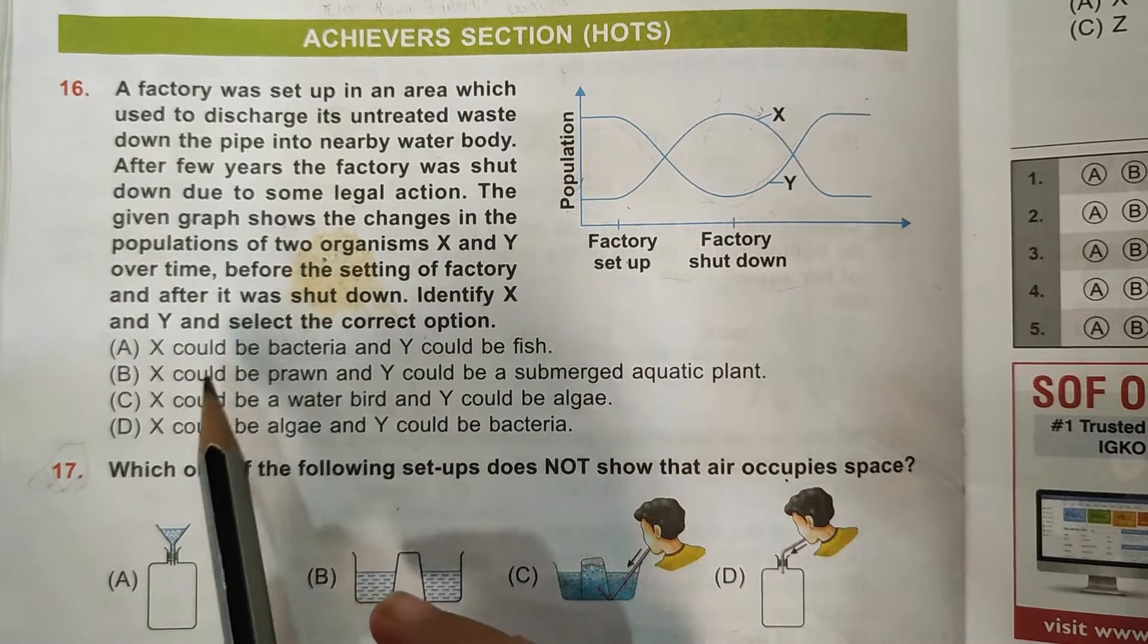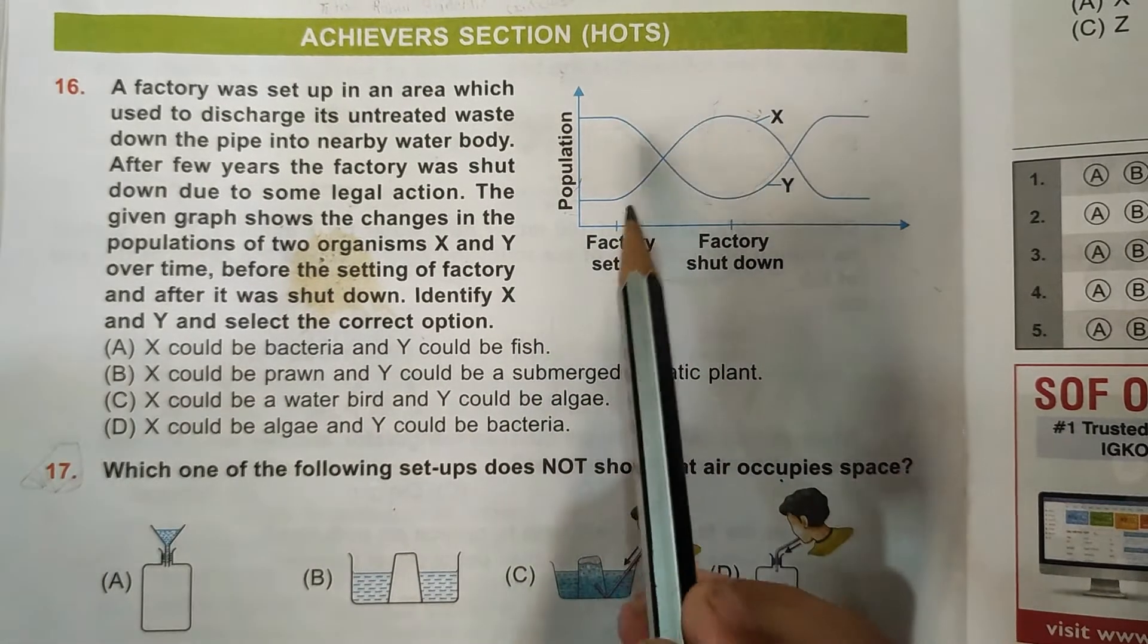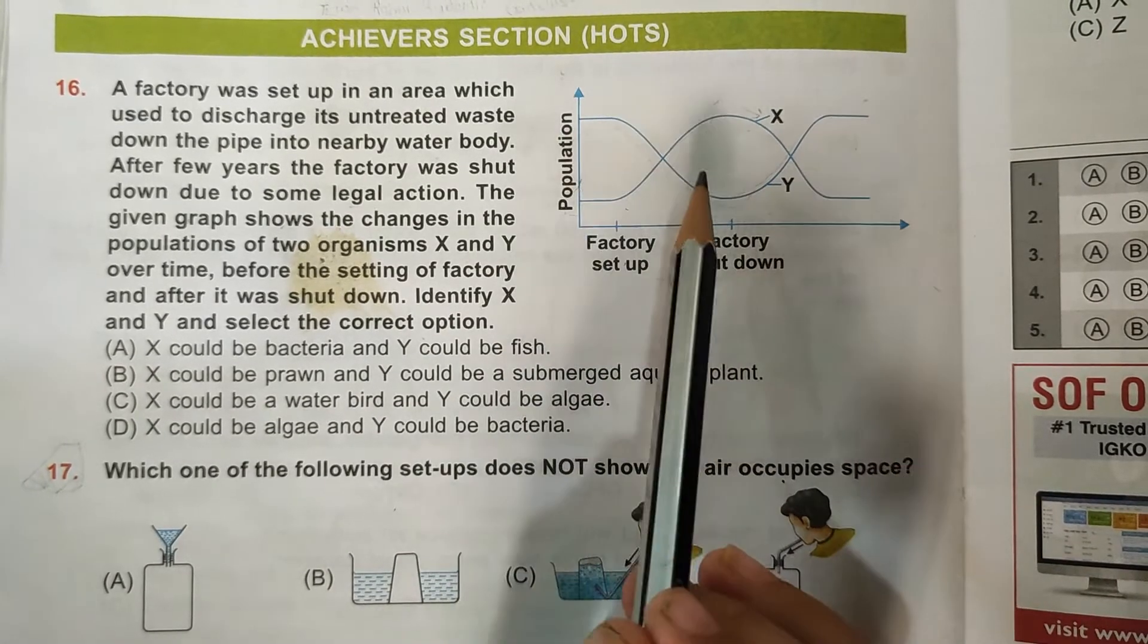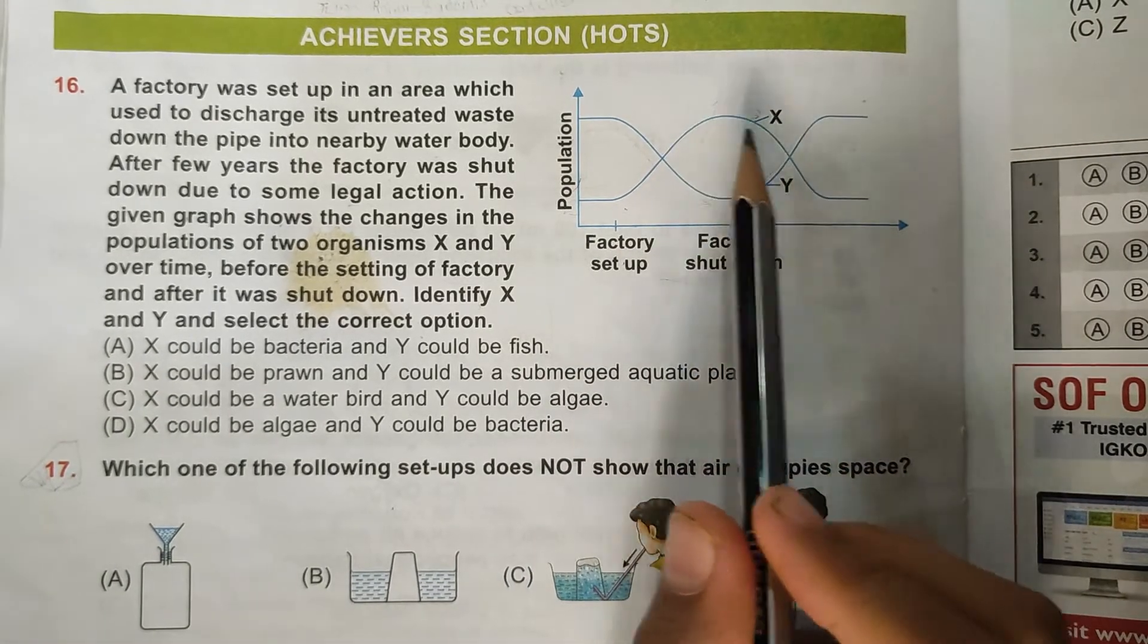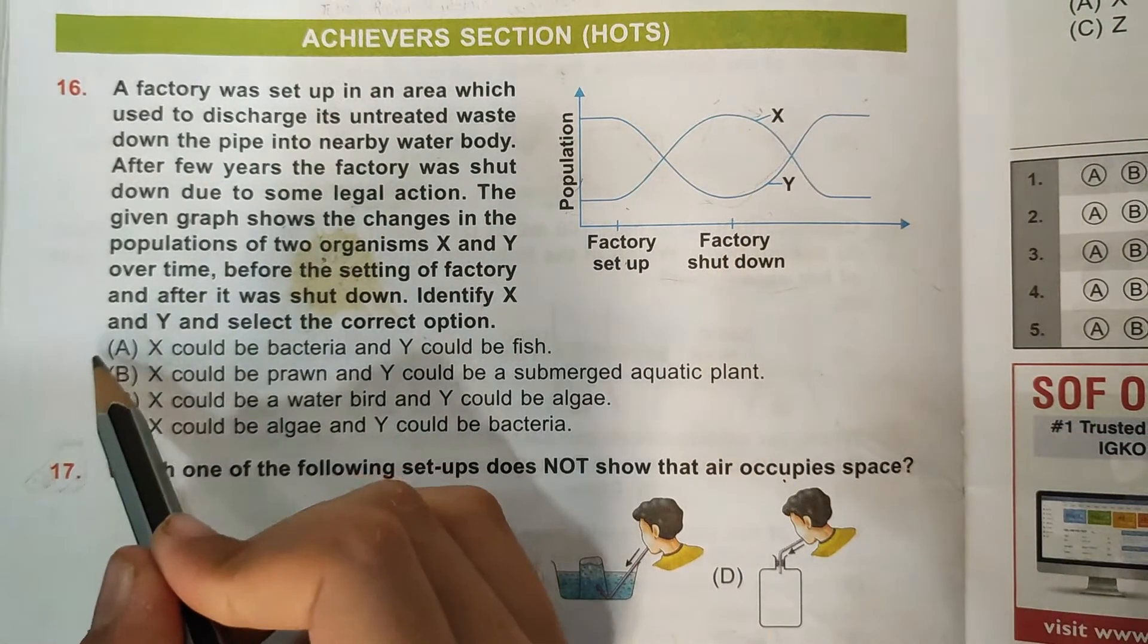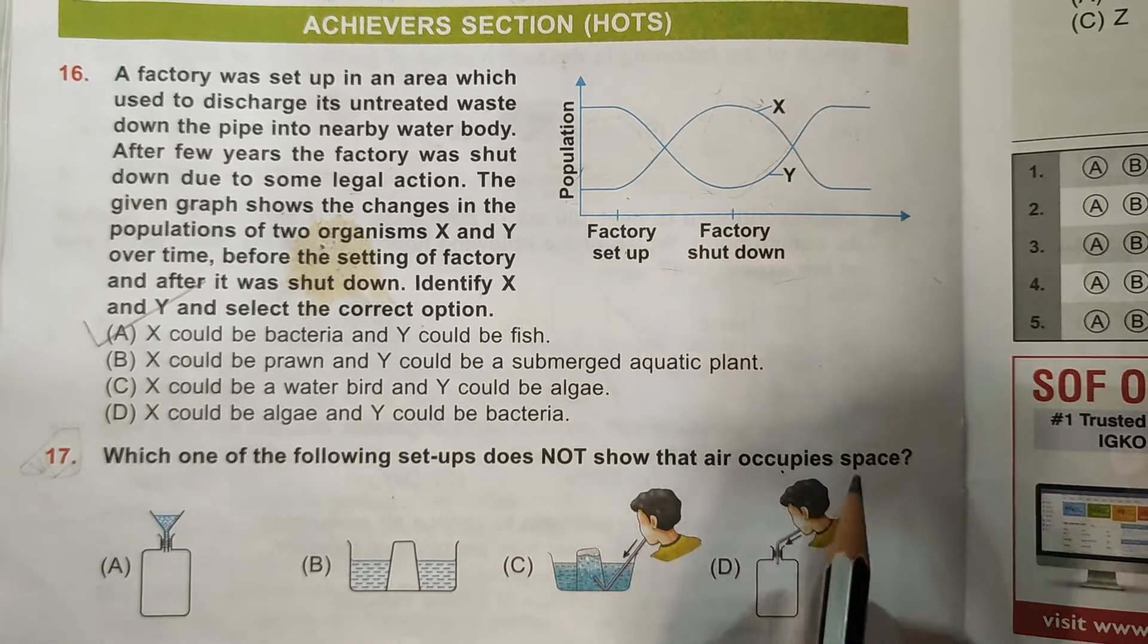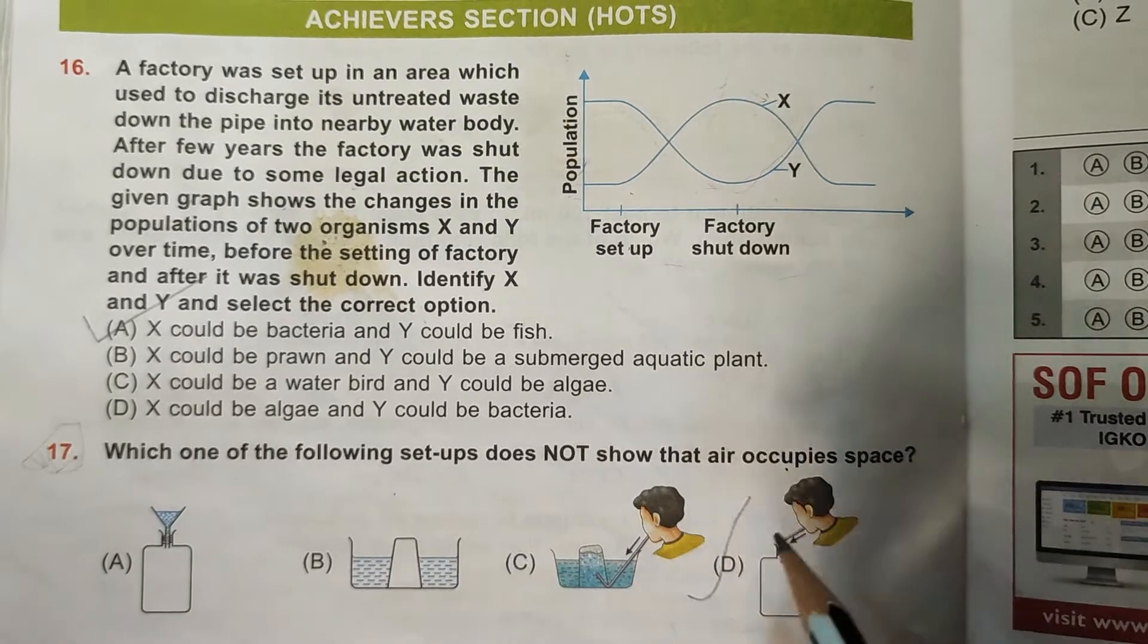So here, X could be bacteria, Y could be fish. That is true because when the factory was set up, the population of X was increasing and the population of Y was decreasing. When the factory shut down, the population of X decreases and the population of Y is increasing, means A is the correct answer. Then 17th question: Which one of the following setups does not show that air occupies space? In the D option it does not show that air occupies space, means D is the correct answer.